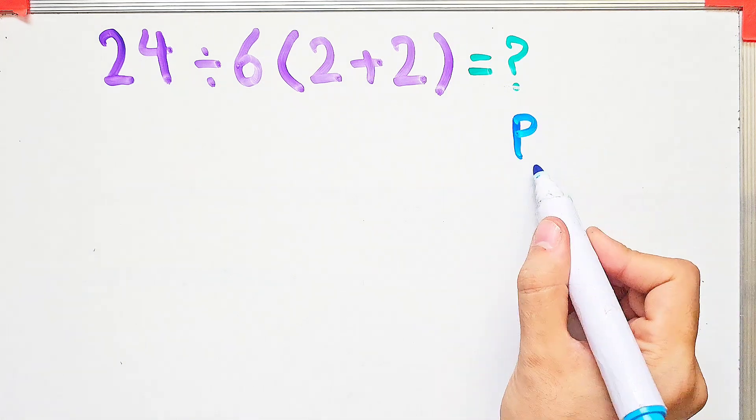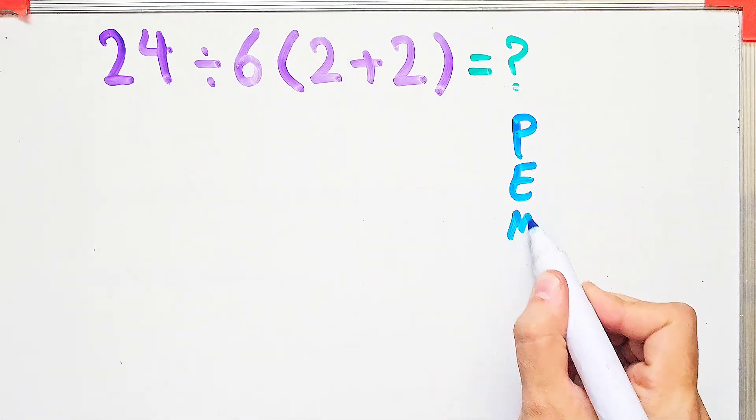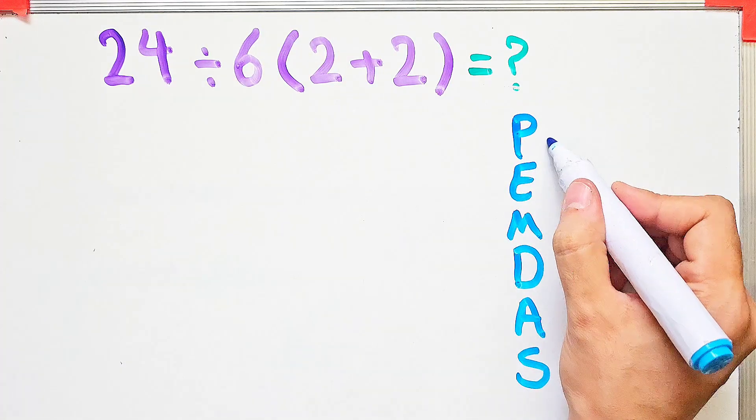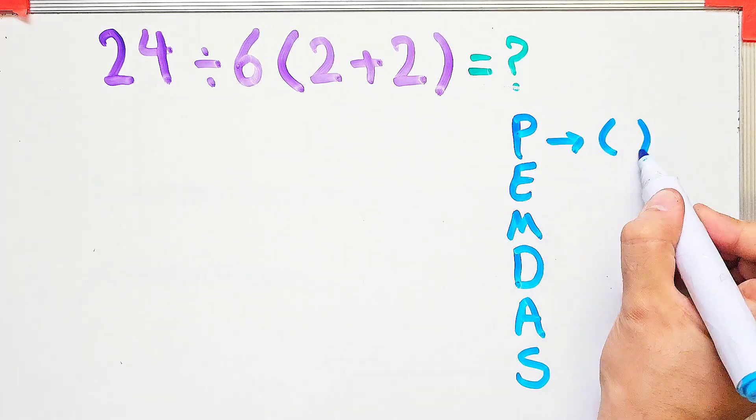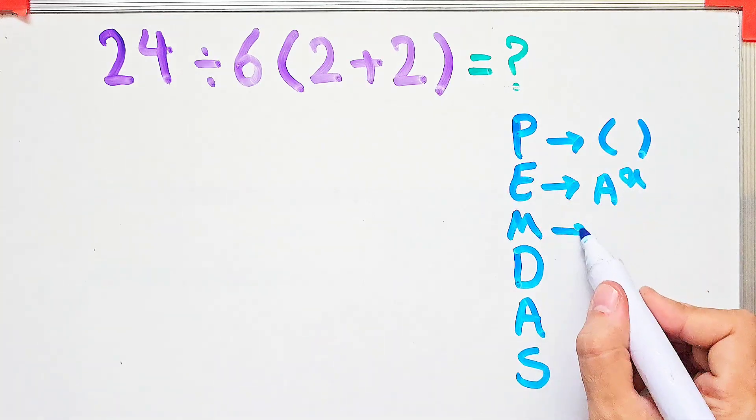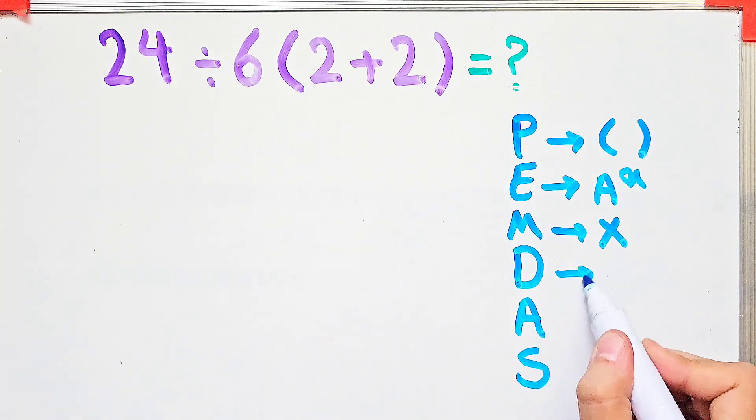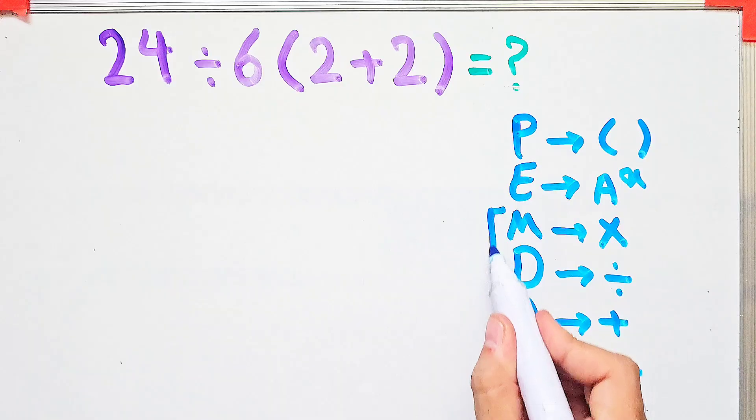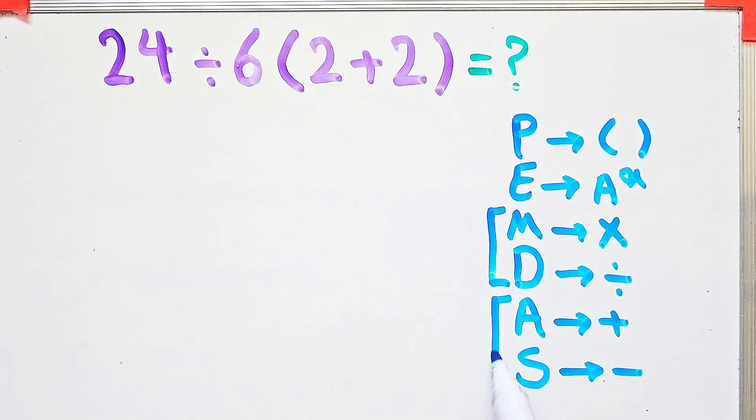Let's solve it step by step together. To solve this question, we need to follow the PEMDAS rule. PEMDAS shows the priority of the mathematical operations. If you don't pay attention to this rule, you get the wrong answer. In this rule, P stands for parentheses, E stands for exponent, M stands for multiplication, D stands for division, A stands for addition, and S stands for subtraction.